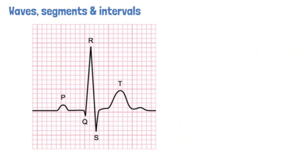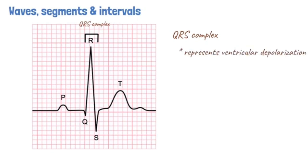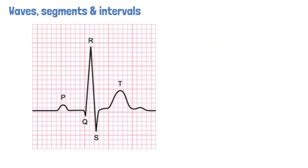The second wave on the ECG is the QRS complex. The QRS complex is a series of three deflections that represent ventricular depolarization. The QRS complex is less than 120 ms in duration under normal circumstances. By convention, the first deflection in the complex, if negative, is called a Q wave.